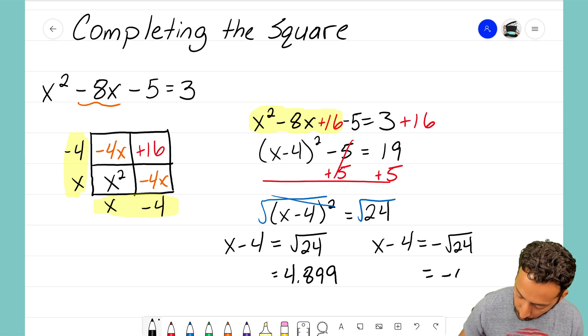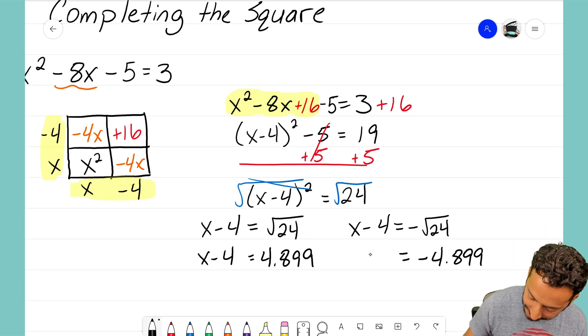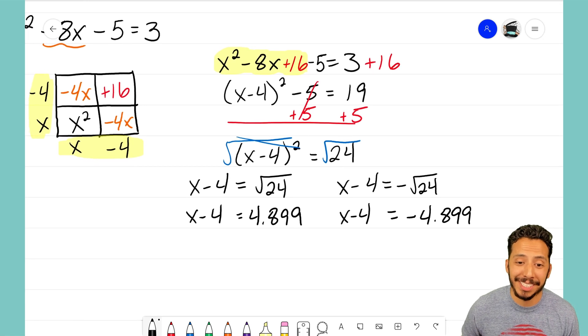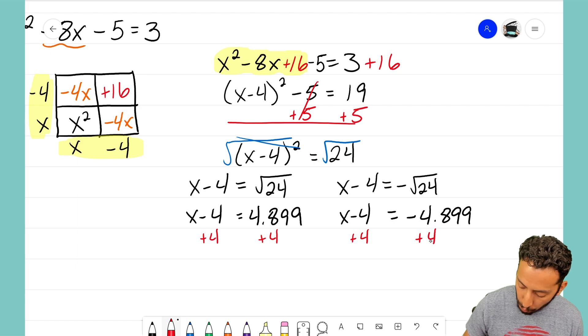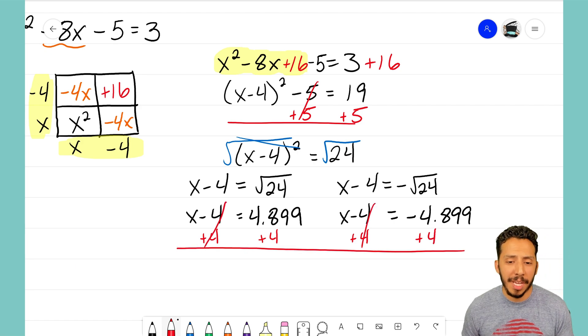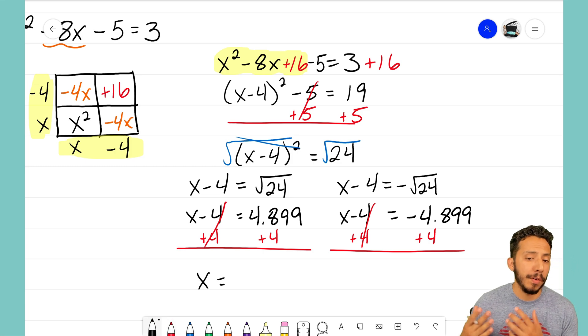Super close to actually becoming 5 but it does round up to 4.899. I know over here this one will be negative 4.899 and we can now start to solve this by writing out the rest of that equation. This ends up being where the easy part is where now the only last step I have to do is I need to add that constant over to the other side. It's the same for both equations here. Those 4s are going to cancel. On the left side I end up with x equals 4.899 plus 4.